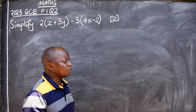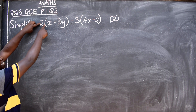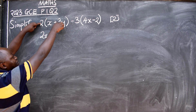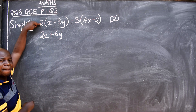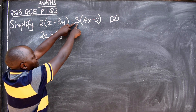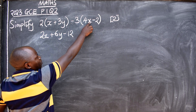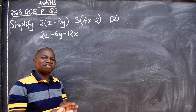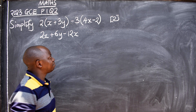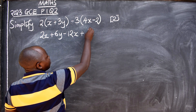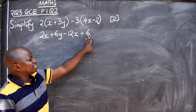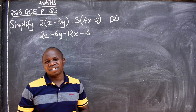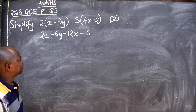How do you get rid of the brackets? You expand. Two times x gives you 2x, plus two times three gives you 6y, minus three times four gives you 12x. Then negative times negative gives you a positive, and three times two gives you six. That is your first step — we have expanded and the brackets will not appear here again.